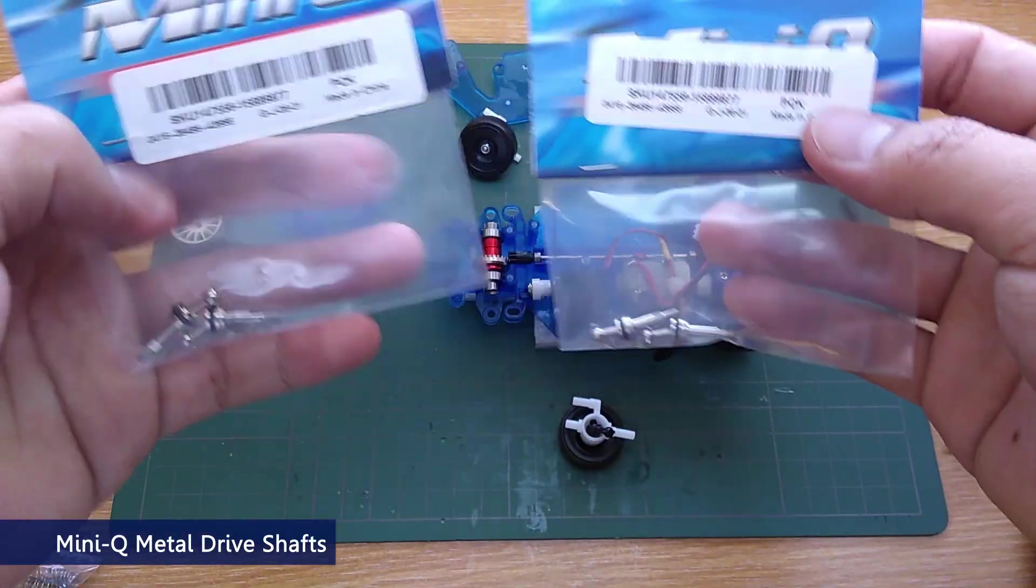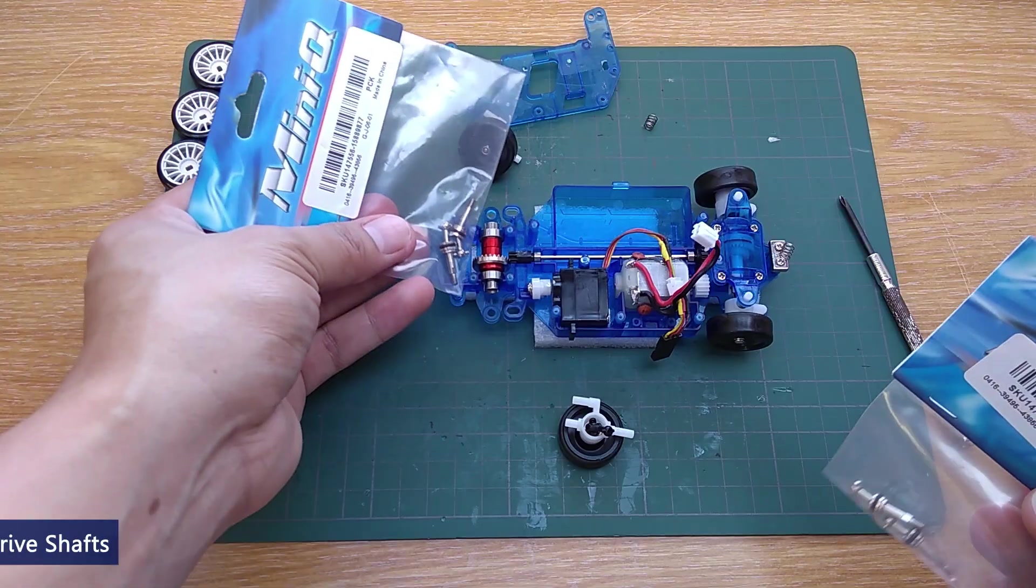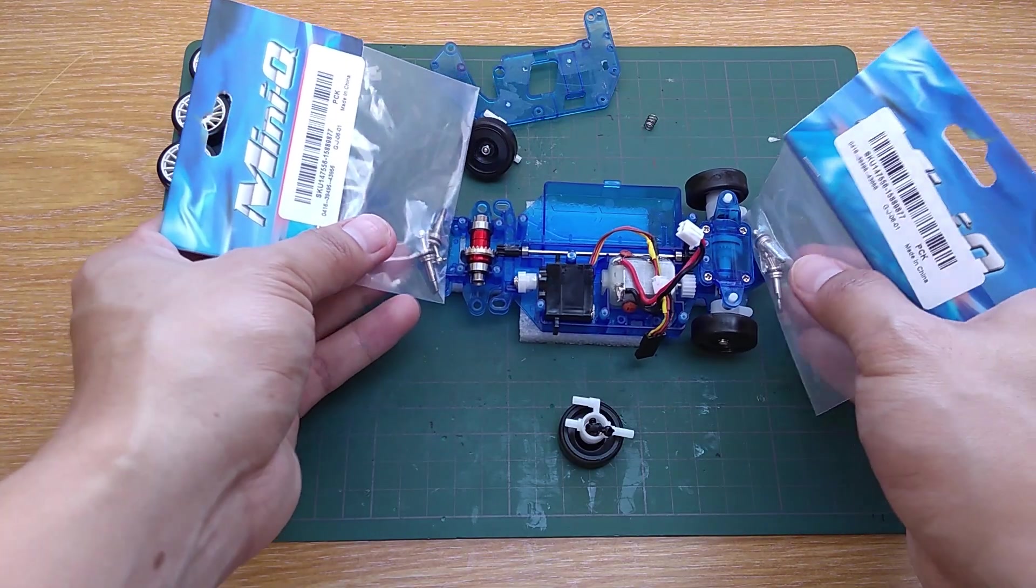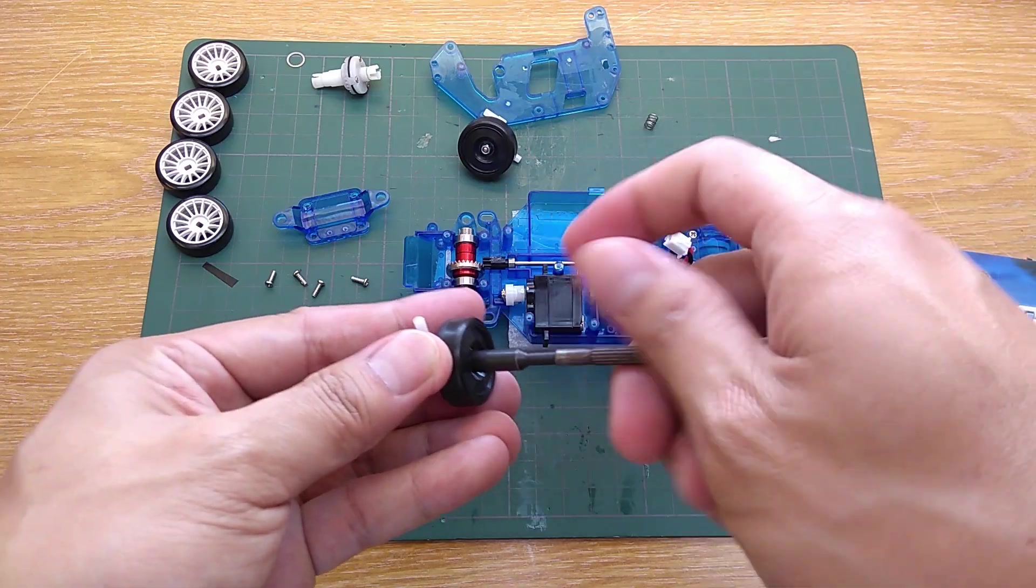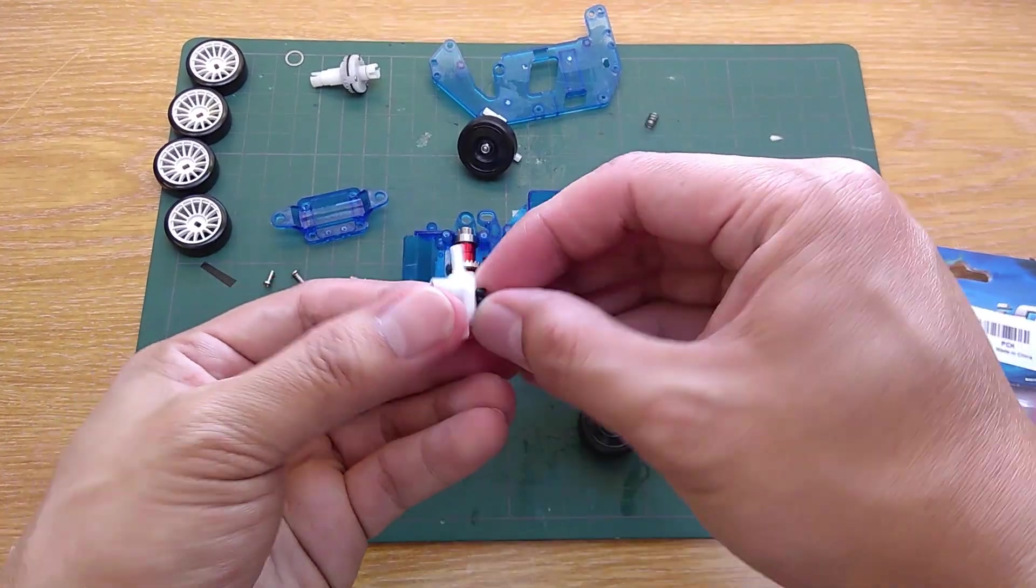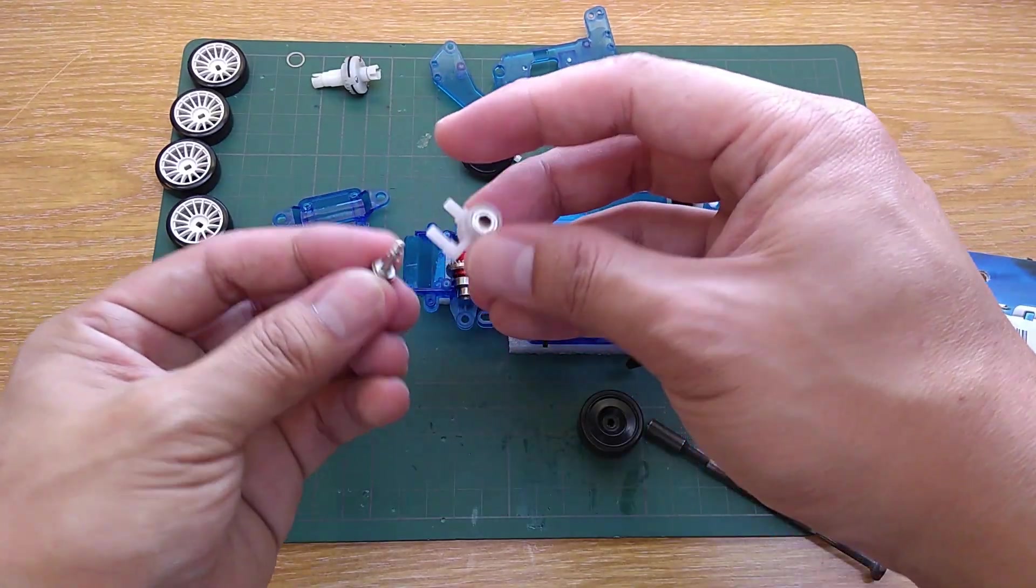Here's the upgrade from Mini-Q once again provided by Banggood. You'll need 2 sets of this, one for the front and one for the rear. The installation is easy. Just pull the old one out and put the new one in.